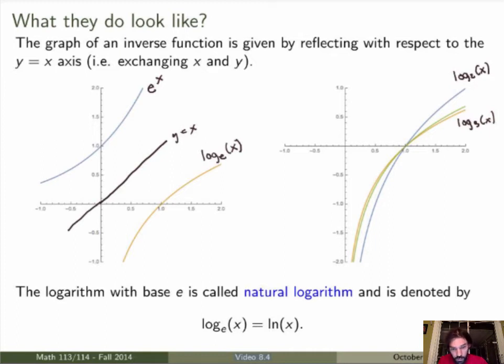And it turns out that the logarithm with the base e has a name as well. It's called natural logarithm. And it's denoted by a simpler expression, which is just ln, so for natural or logarithm natural of x. So this here would be ln of x, I think.